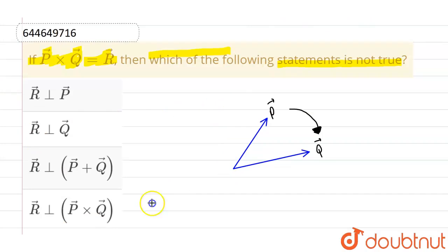So in this particular diagram, this will be the P cross Q-vector. Let me draw it. This will be the P cross Q-vector which is perpendicular to both P-vector as well as Q-vector.